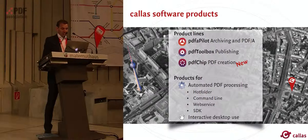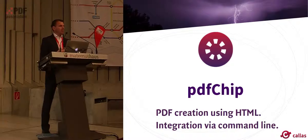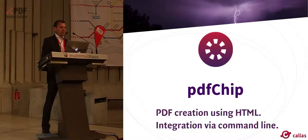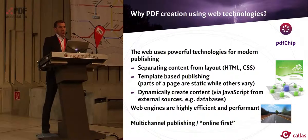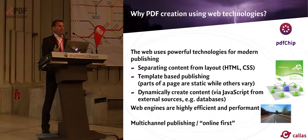What is actually PDF Chip? PDF Chip is about creating PDF where the source is HTML or web technologies. It's a command line tool and it can be integrated into workflows or applications on the command line. Why do we think HTML or web technology is a good format to create PDF from? Web technology, when it's about publishing, offers quite modern concepts. One principle is separation of layout and design from the actual content, which allows for template-based publishing.